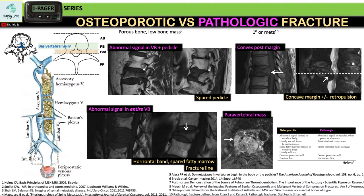We're going to differentiate an osteoporotic fracture versus a pathologic fracture. An osteoporotic fracture involves porous or fragile bone due to low bone mass. A pathologic fracture involves weakening or fracturing of the bone because of a primary bone lesion or a metastatic bone lesion. A metastatic bone lesion means there is malignancy elsewhere in the body — for example, breast or lung cancer in the chest, or prostate or rectal cancer in the pelvis. For our purposes, we'll give examples of metastatic pathologic fractures.